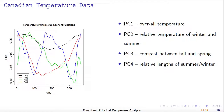The second FPC, the red curve, is positive in the winter and negative in the summer. So we can interpret FPC 2 as the change of temperature between winter and summer. The third FPC, the blue curve, is positive in the spring and negative in the fall, so FPC 3 score is interpreted as the change between temperature in the fall and the spring.